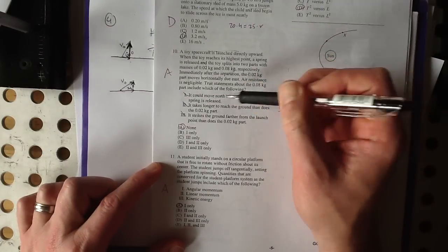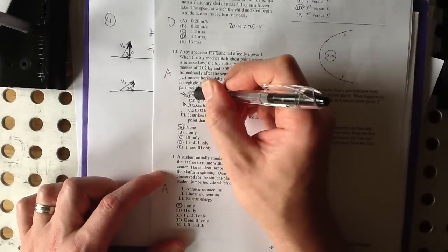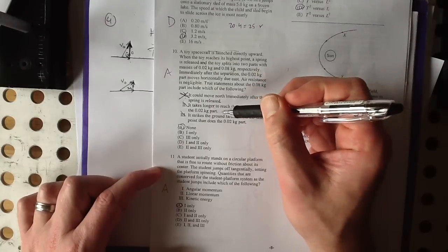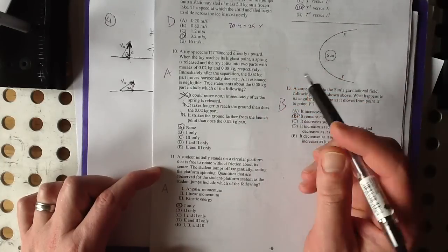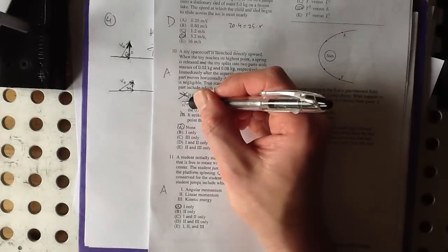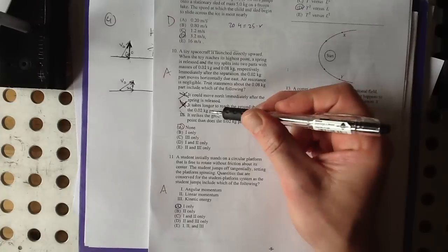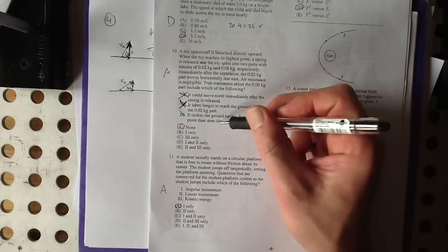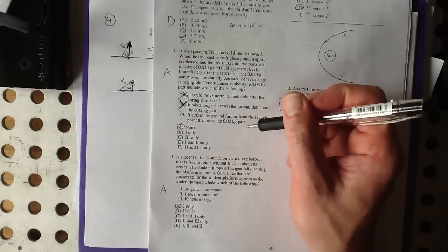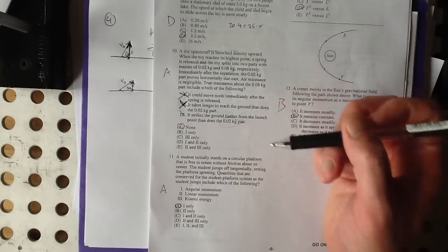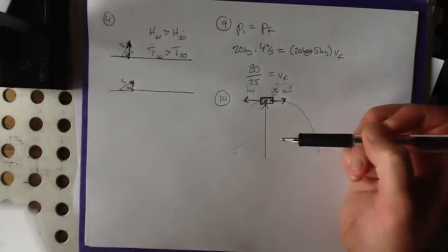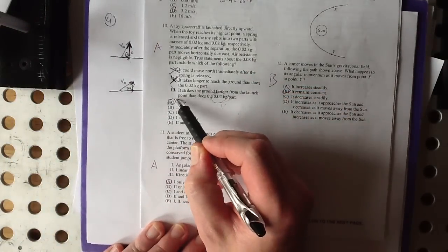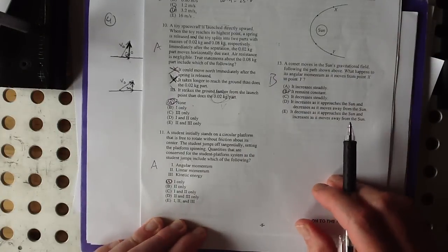It could move north immediately after the spring is released. No, it's got to move west, so that's not true. It takes longer to reach the ground. Well, we know if we drop two things with no vertical velocity, which these ones do not have, they'll hit the ground at the same time. So that's not true. It strikes the ground farther from the launch point than does the 0.02 kilogram part. That might be tempting, but that's actually the opposite of what happens. This one goes farther, and the 0.08 is closer, right? Since this one is less massive, it has to have a bigger velocity for mv to equal mv. So the correct answer is none. Kind of tricky.